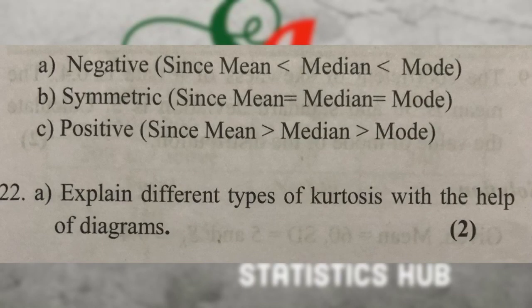Explain different types of kurtosis with the help of a diagram. Kurtosis refers to the peakness of a distribution. The three types are leptokurtic, mesokurtic, and platykurtic.